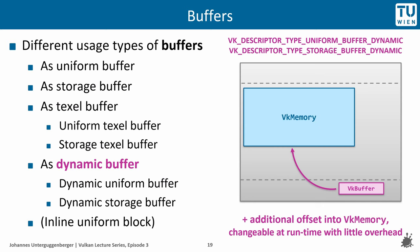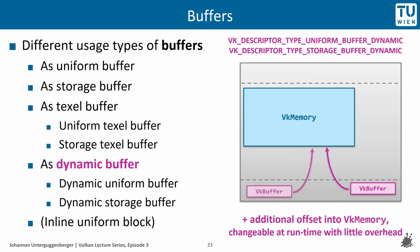Moving on to further buffer usage: dynamic buffers are very similar to UniformBuffers and storage buffers, except that they support additional dynamic offsets that can be dynamically changed. An application can change the offsets dynamically during runtime without paying the overhead of creating entirely new buffer objects or handling offsets in more complicated ways like manually keeping track of them. It is also an option to have multiple VkBuffer instances bound to the same VkMemory region, using different or dynamic offsets to refer to different regions within that GPU memory.